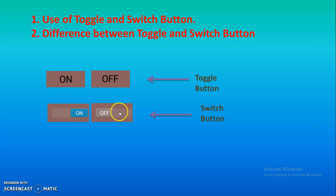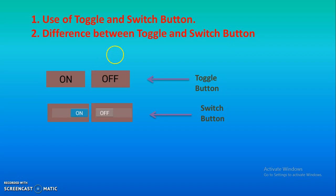If you want, you can use switch or you can use the toggle button in your program. Both have two states — on and off — and their default state is always off. By using coding you can also change their text. You can change the default text: in place of 'on' you can write other text, and in place of 'off' you can write other text.